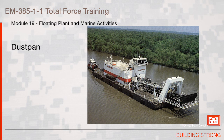This image is an example of a dustpan dredge, a plain suction and self-propelled dredge that uses a suction mouth shaped like a large dustpan or vacuum cleaner, fitted with water jets for dislodging bottom sediment. These types have traditional application in the Mississippi River system and where there is unconsolidated sediment.